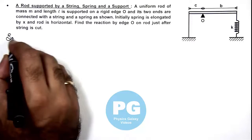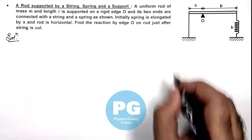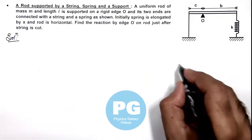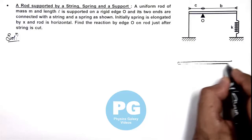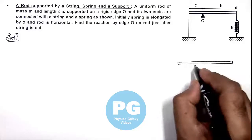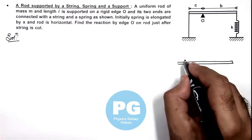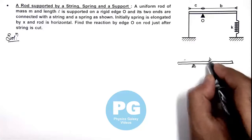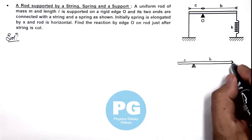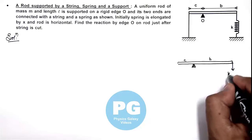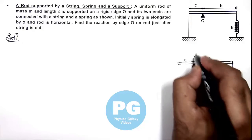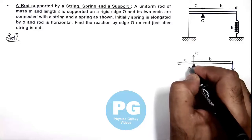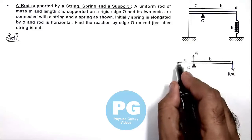In this situation, if we draw the situation of rod just after string is cut, the situation would be like this, where this is the support at O. This distance is c, this distance is b, and spring would be applying a force kx on this end. A normal reaction would be acting at the edge O in upper direction as string is just cut over here.